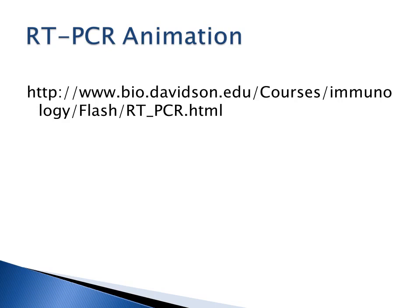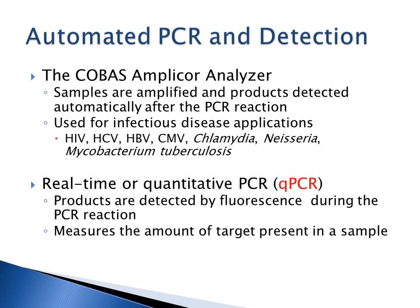There are automated PCR and detection systems commercially available. The COBAS Amplicor Analyzer amplifies samples and detects products automatically, available for HIV, HCV, HBV, cytomegalovirus, chlamydia, Neisseria, and Mycobacterium tuberculosis. There's also automated real-time or quantitative PCR (qPCR) where products are detected by fluorescence during the PCR reaction.